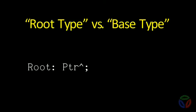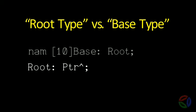Here is an example showing the difference between a root type and a base type. We define PTR to be a pointer to root. If we just looked at this declaration of PTR alone, we might falsely assume that its root type named root is also a base type and therefore a terminal. But if we look at the declaration of root, we see that it is an array of count 10 of type base. Because it was declared with NAM instead of TYP, root is not a base type because it is an array. In this example, we will assume that base is itself a base type, but it may not be.